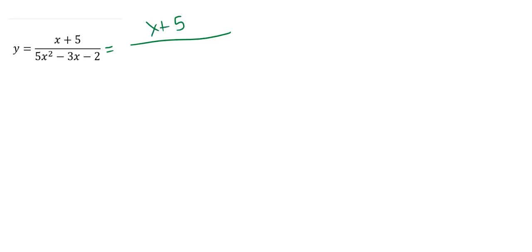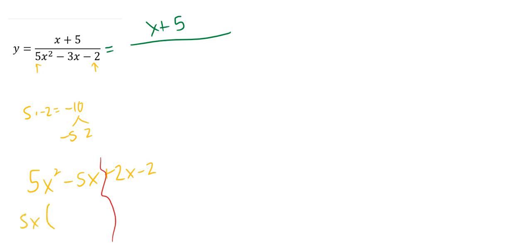The numerator here does not factor — it's just x plus 5. For the denominator, I factor by multiplying 5 and negative 2 to get negative 10, then look for things that multiply to negative 10 and add to negative 3, like negative 5 and positive 2. I rewrite the denominator as 5x squared minus 5x plus 2x minus 2 and do factor by grouping. I get 5x as my GCF on the left and positive 2 on the right, which factors to 5x plus 2 times x minus 1. So my excluded values are negative 2 fifths and positive 1. If they cancel after simplifying, they are holes; if they don't cancel, they are vertical asymptotes.